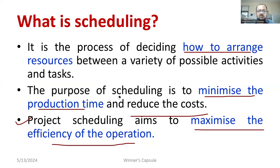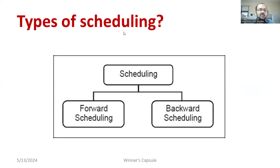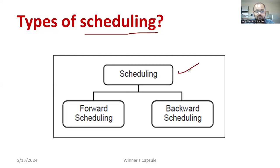The major purpose is how to arrange resources, how to save the production time, and how to improve the efficiency. These are the major aspects of scheduling. Scheduling has been divided into two types: the first one is forward scheduling and the other one is backward scheduling.